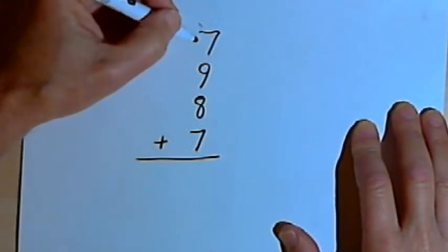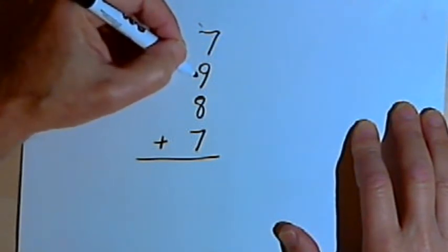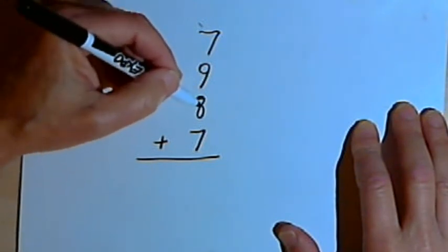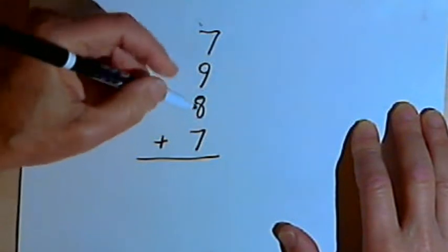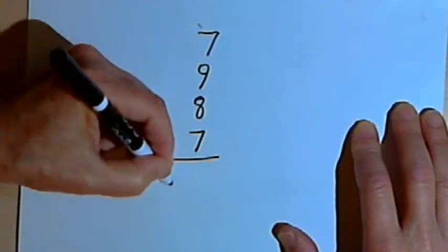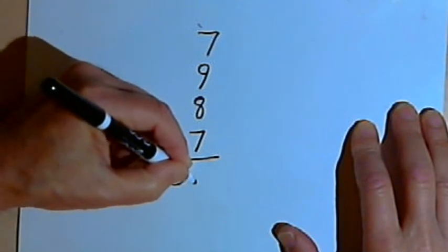So let's start at the top. I've got 7 plus 9 is 16. And now I've got to remember that 16 and add an 8 to it. So 16 plus 8 is 24. Now I've got to remember the 24 and add a 7 to it. And 24 plus 7 is 31.